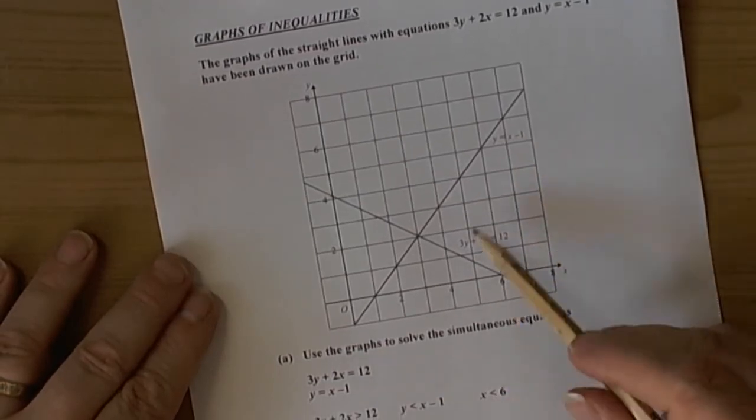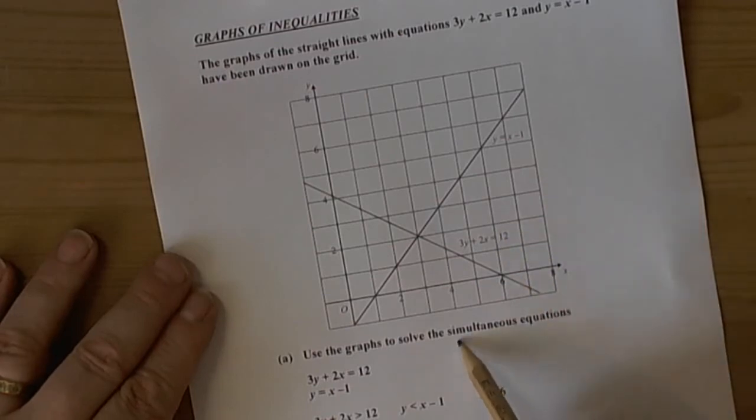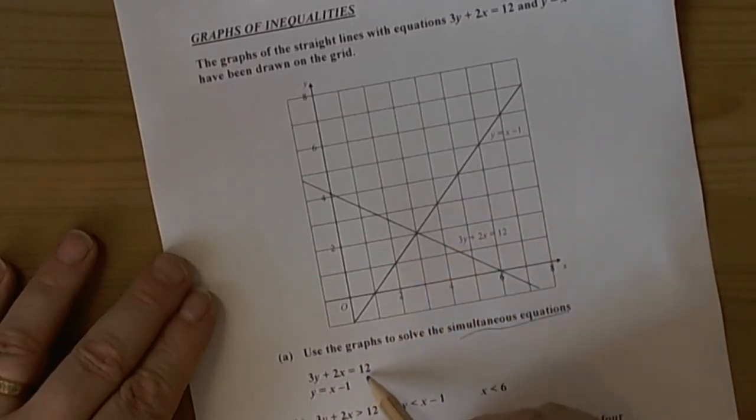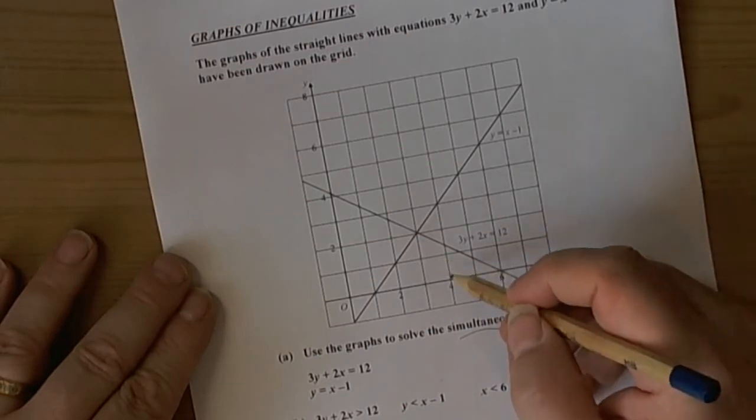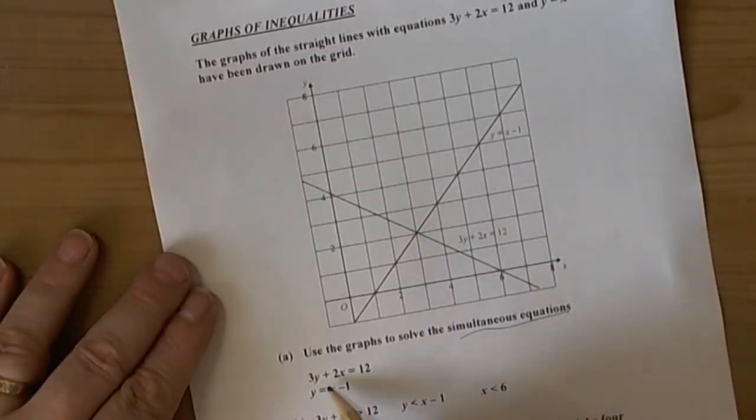The first question asks us to use the graphs to solve the simultaneous equations: 3y plus 2x equals 12 and y equals x minus 1. These are the two lines drawn. The solution is where the two graphs cross each other, because that's when both equations will have the same x and y values.